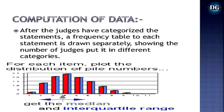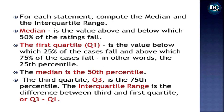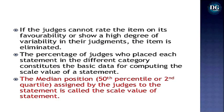Computation of data: after judges categorize the statements, a frequency table for each statement is drawn showing the number of judges who placed it in different categories. For each statement, compute the median and interquartile range. The median is the value above and below which 50% of ratings fall; Q1 is the 25th percentile and Q3 is the 75th percentile. The interquartile range is the difference between Q3 and Q1. Items with high variability in judgments are eliminated.